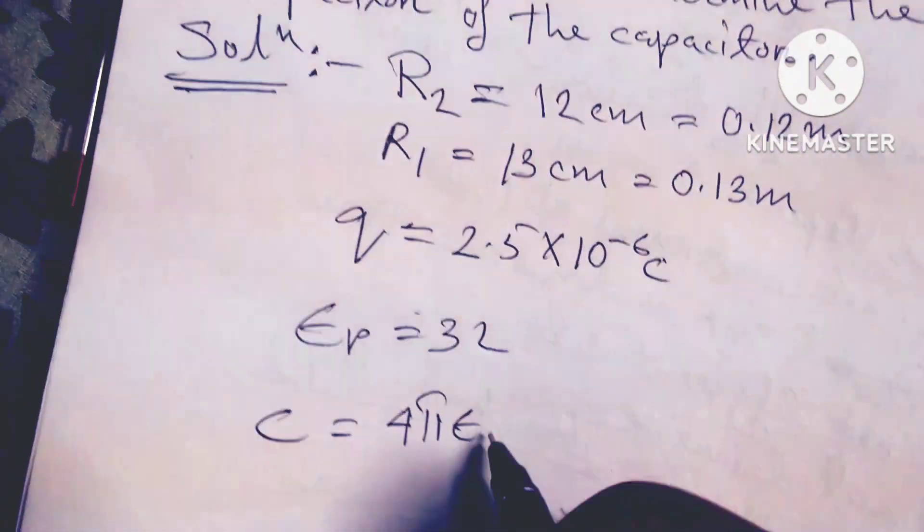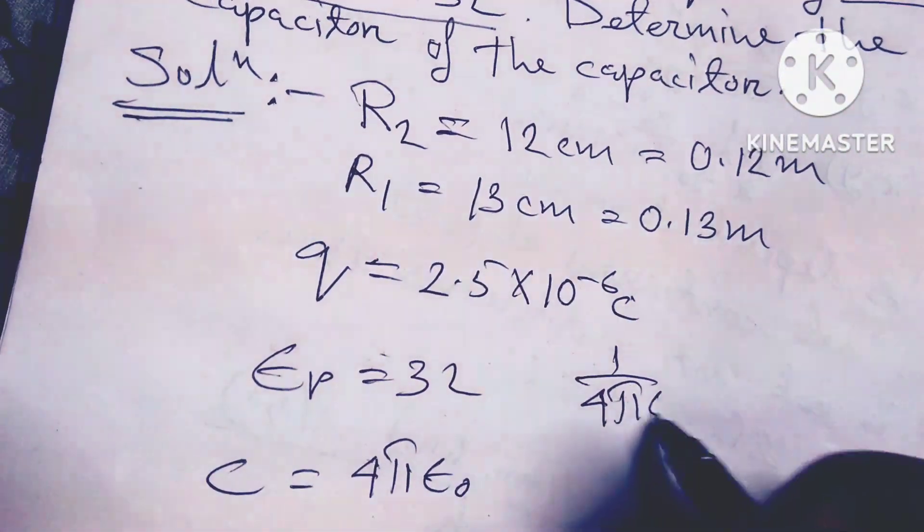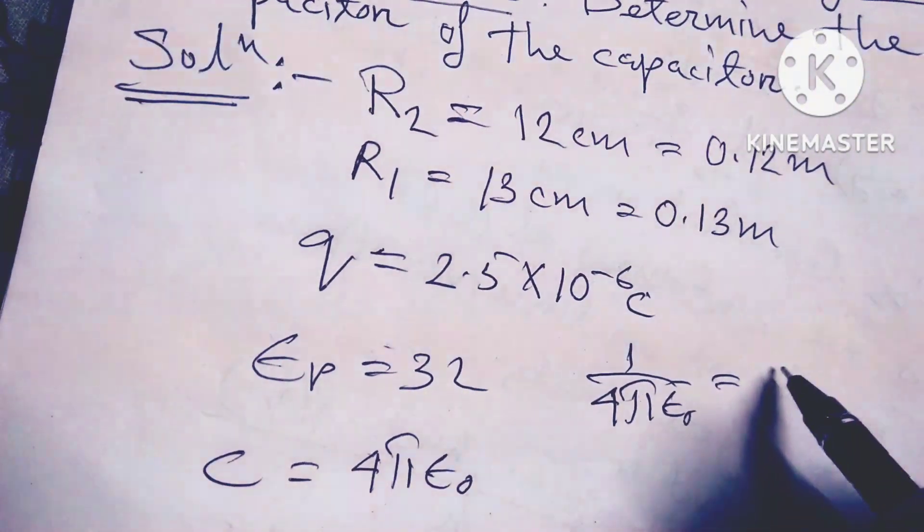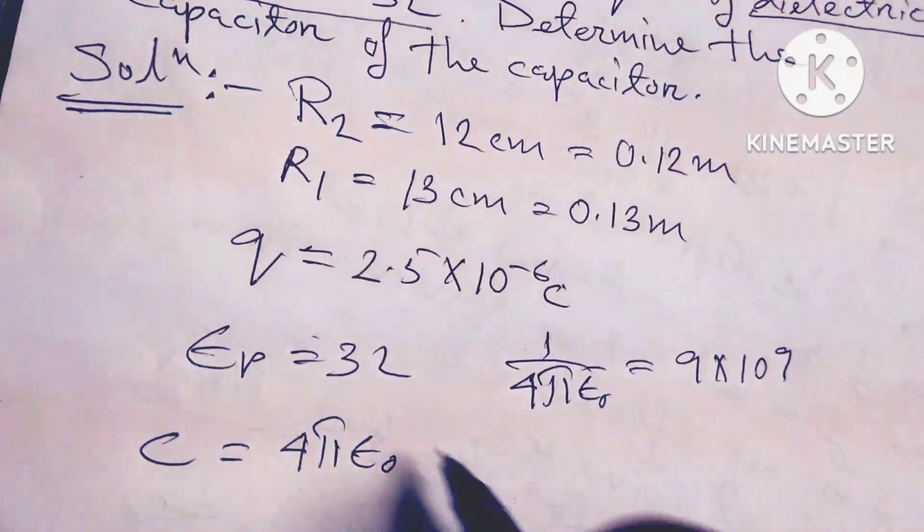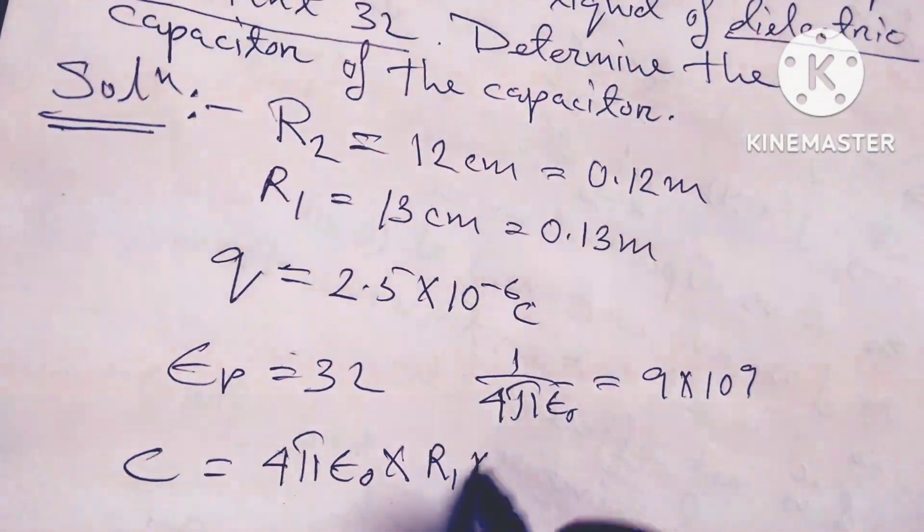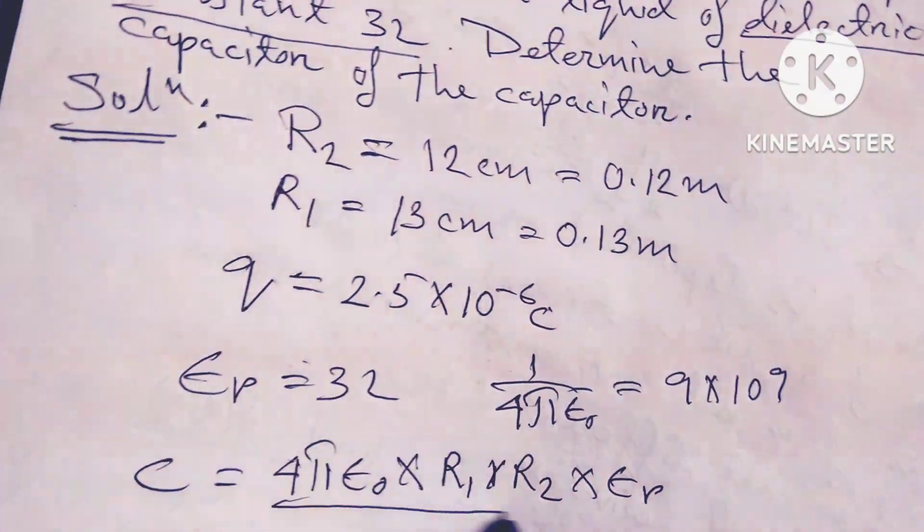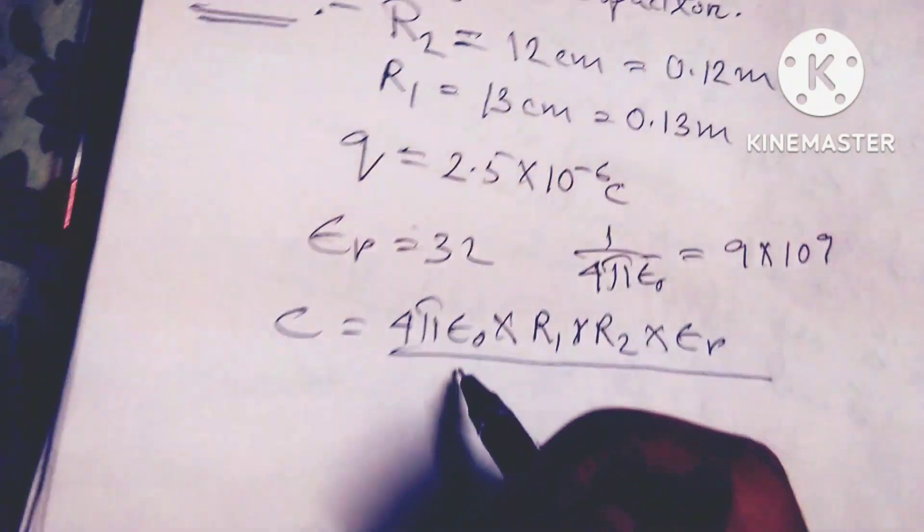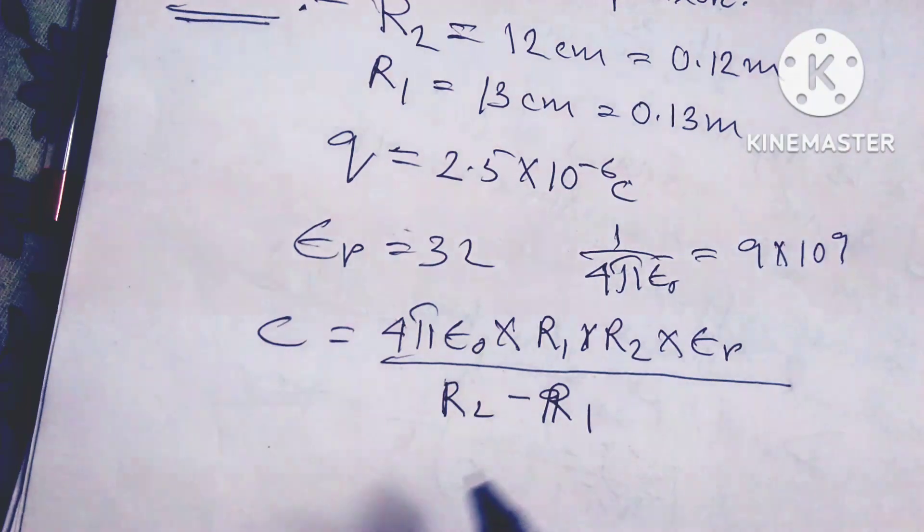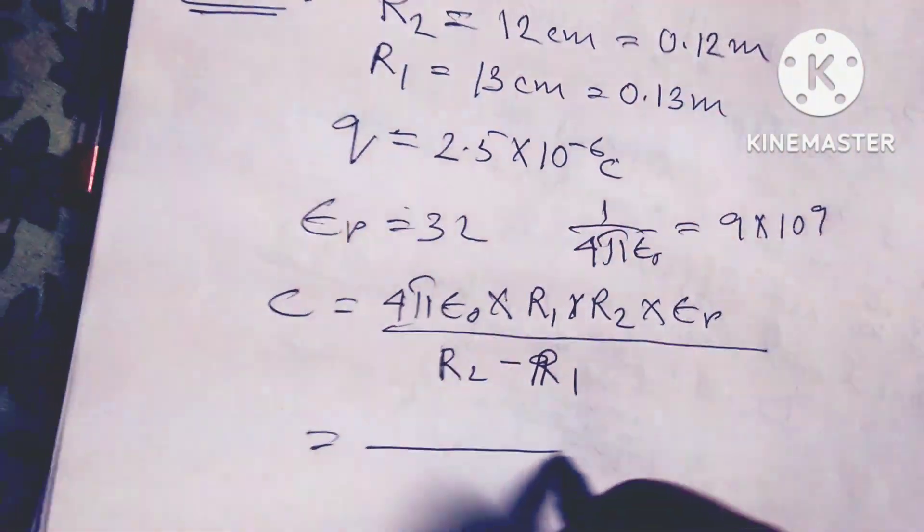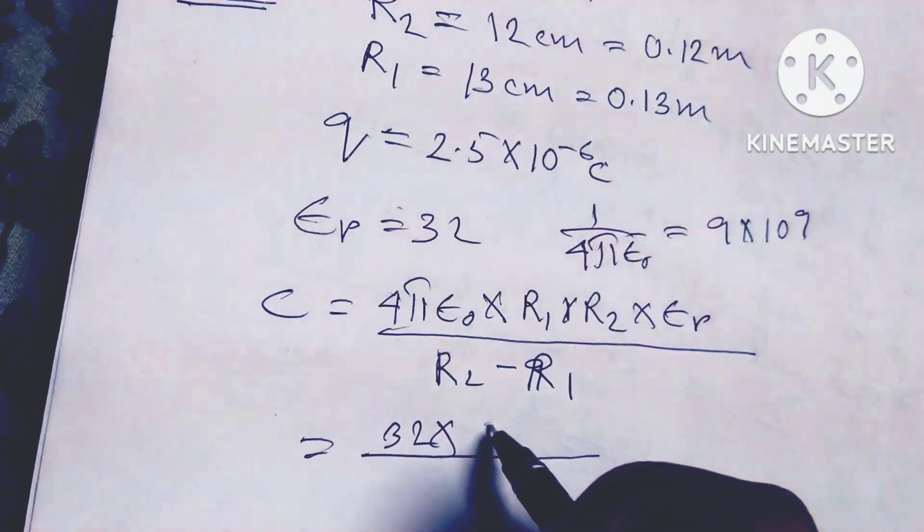Since 1/(4πε₀) = 9 × 10⁹, we have C = 4πε₀R₁R₂εᵣ/(R₂ - R₁) = 32 × 0.12 × 0.13 divided by